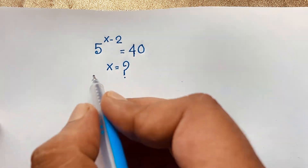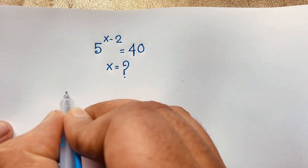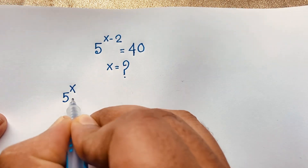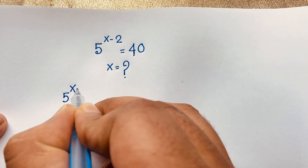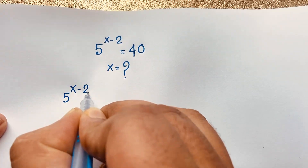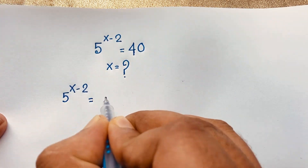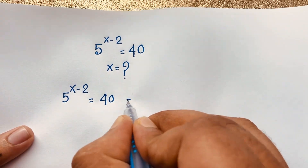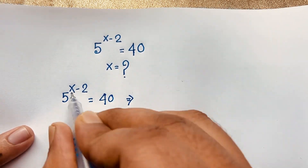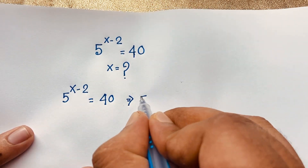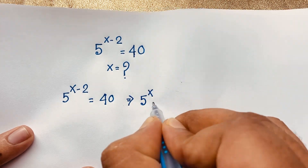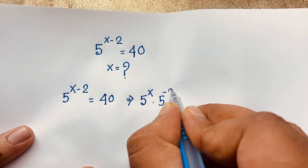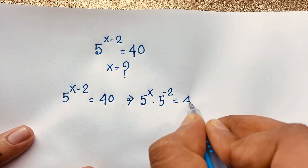So, solution. Our question: it will be 5 to the power x minus 2 is equal to 40. This is our question. You can see easily, it will be 5 to the power x times 5 to the power negative 2 is equal to 40.